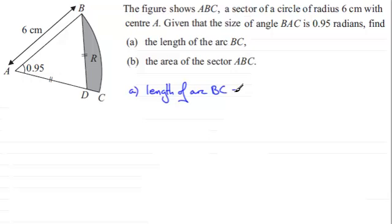Now, this arc length here is a fraction of the circumference of the whole circle. And that fraction is going to be 0.95 compared with or out of the angle for a full turn. Now we're working in radians here, so the number of radians in a full turn is 2π. And so we've got this fraction of the circumference of a full circle, which is 2πr, and in this particular case, the radius is 6.